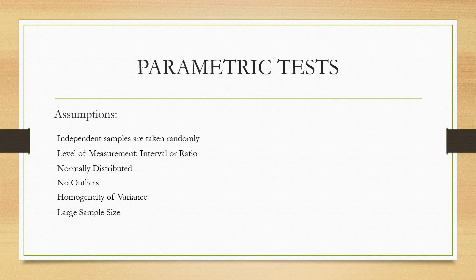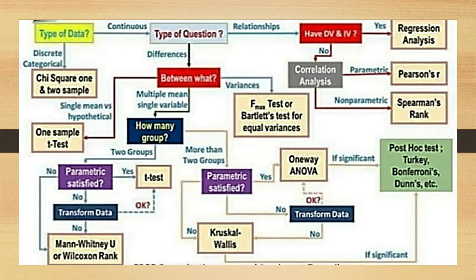Now, we will interpret a decision tree for choosing a statistical test — these are the most commonly used tests. Take note that the statistical test to be used is based on your research problem or question, the hypothesis, and the normality test result. So let's start.